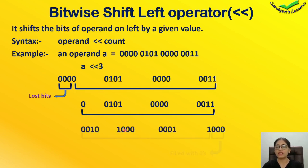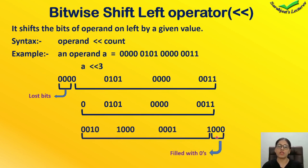We need to add three bits from the right side, and those bits will be zeros. Every time we need to fill with zero bits properly. We need to fill and complete the set. So we remove three bits from the left side and fill three zero bits on the right side.